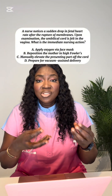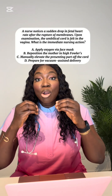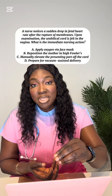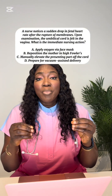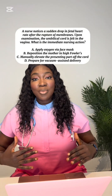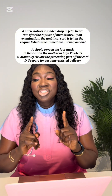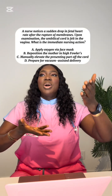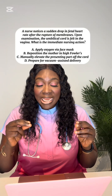Option A, apply oxygen via face mask — the oxygen only goes to the mother, not the baby, because the compressed cord is what supplies oxygen to the baby. Option B, high Fowler's position, is dangerous — you would actually want Trendelenburg position to push the baby backward and relieve cord compression. Option D, prepare for vacuum-assisted delivery, is dangerous in this situation; an immediate C-section must be performed.